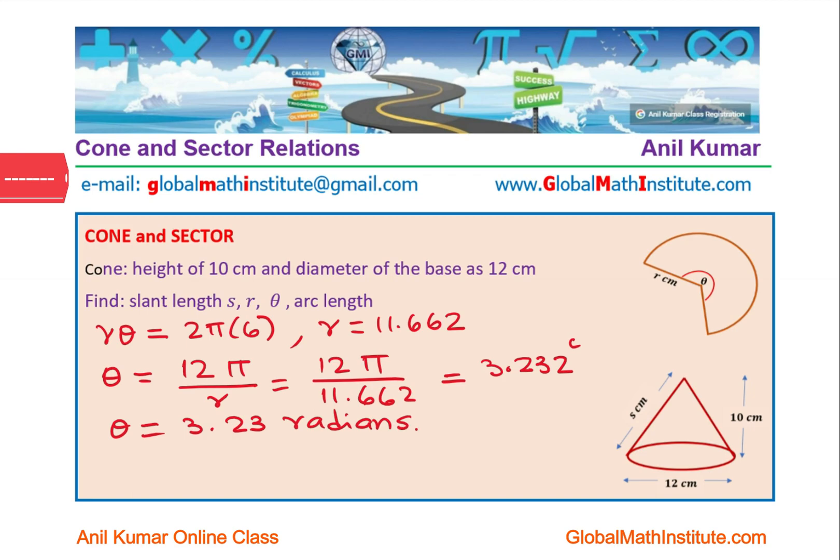We know that theta is 3.23 radians. So we have got all the parameters: the slant length same as r, theta as 3.23 radians, and arc length A was equal to the circumference, which is 2 pi times 6. This is the exact value, 12 pi. Let us calculate: 12 times pi, which in decimals is 37.69, so I will round it to 37.7 centimeters.